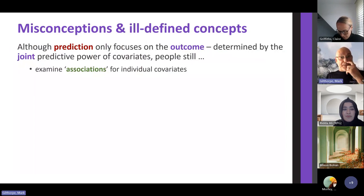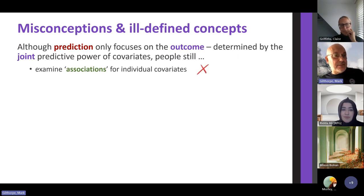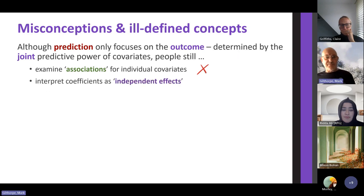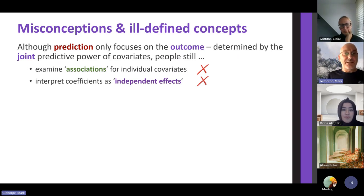There are misconceptions as a result. Prediction focuses on the outcome, but people still look at individual covariates and examine associations — they're meaningless. People try to interpret the coefficients as if they're independent effects, which is a misnomer. If covariates are correlated, statistical independence means they're uncorrelated — and if many covariates are correlated, interpreting them individually is meaningless as well.